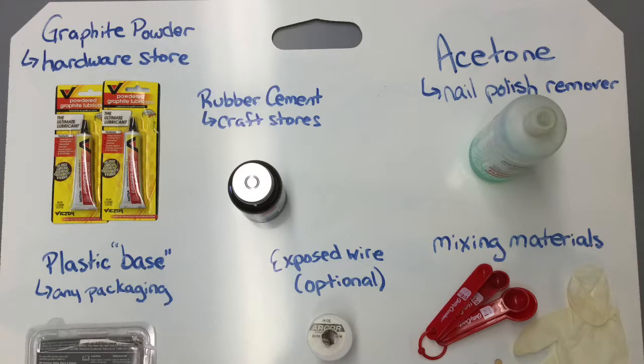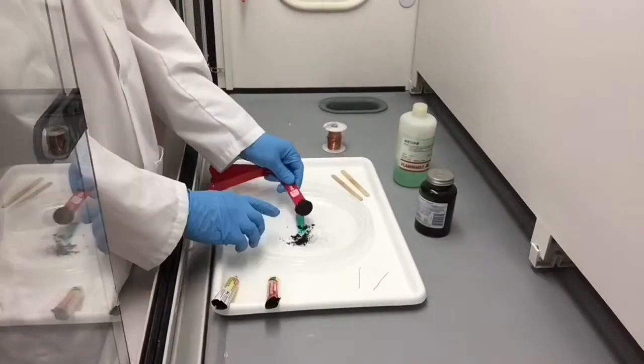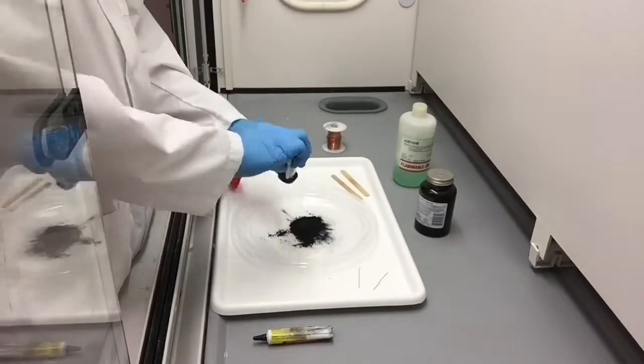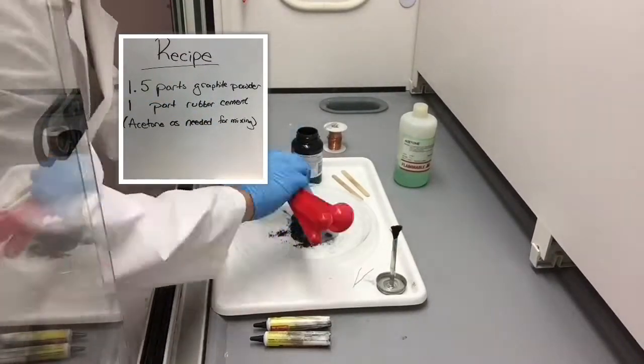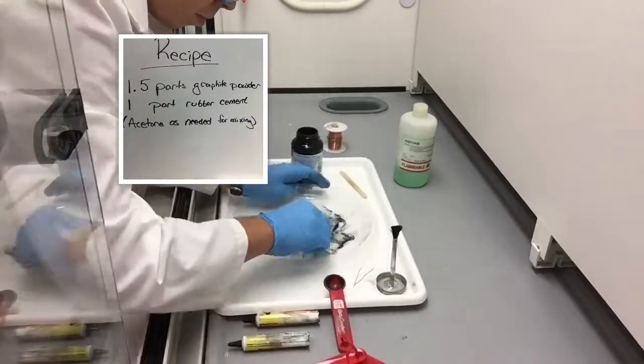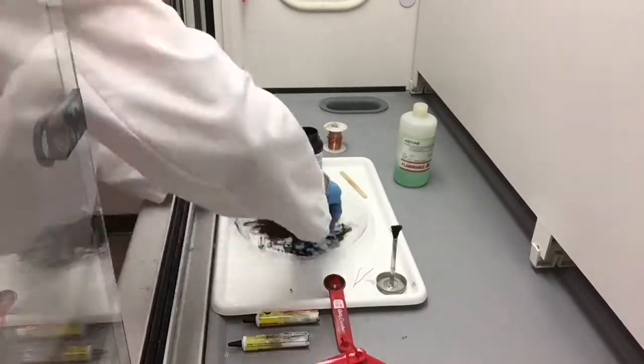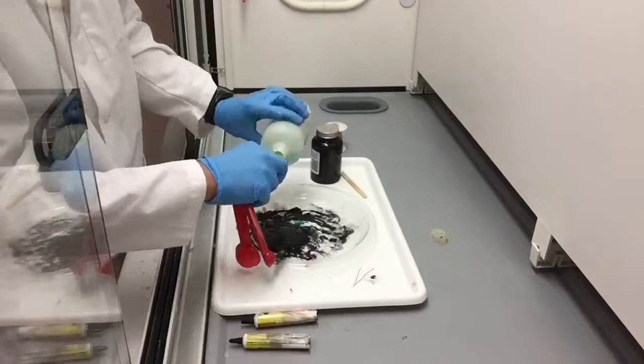The materials we use to make a flexible variable resistor are shown here. All of these materials can easily be found at your local hardware or craft stores. The recipe for making the resistor is 1.5 parts graphite powder and one part rubber cement. Acetone is used as needed for a solvent.